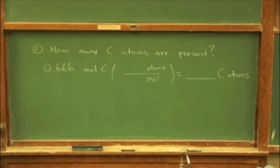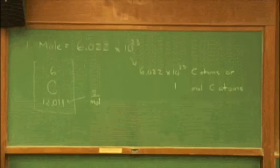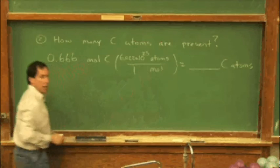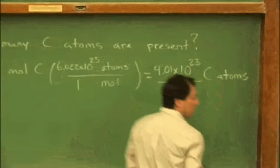And in fact, at the top of the board, the so-called Avogadro's number is a conversion factor that tells us how many items are in a mole. One mole. 6.022 times 10 to the 23rd atoms. So, 6.022 times 10 to the 23rd. And I come up with 4.01 times 10 to the 23rd carbon atoms.